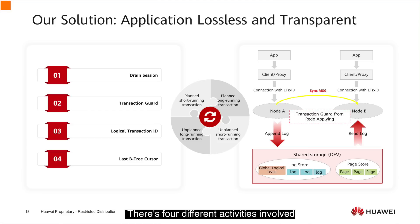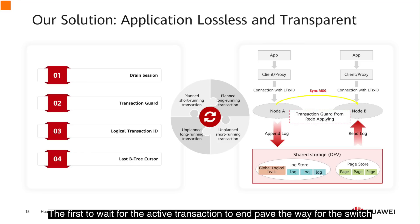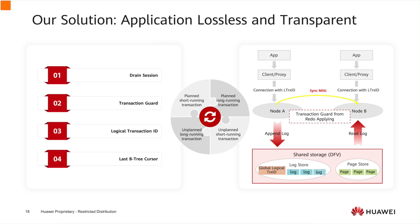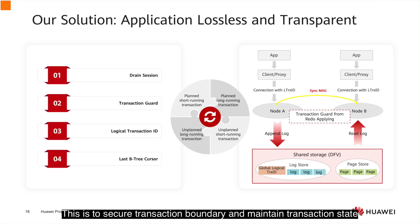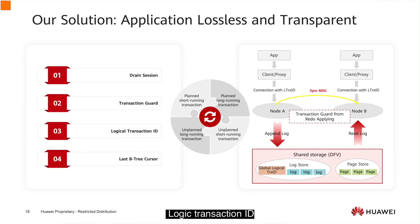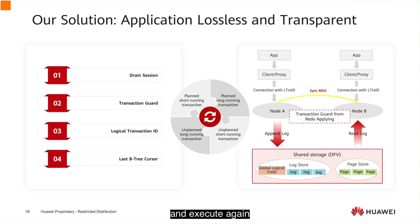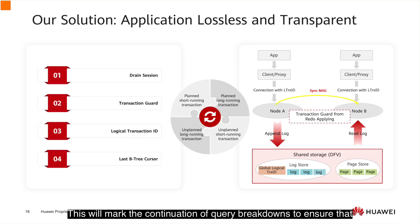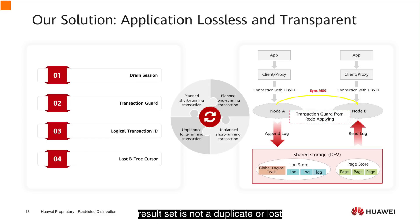There are four different activities involved. First, drain session — wait for the active transaction to end, paving the way for the switch. Second, transaction guard — secure the transaction boundary and maintain transaction state, which needs to be synchronized from the source node to the target node. Third, logical transaction ID — used to locate the transaction at the target node and execute it again. The last one is the last read cursor, which marks the continuation of a query to ensure that the result set is not duplicated or lost — no more, no less.